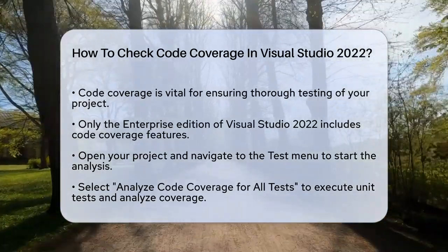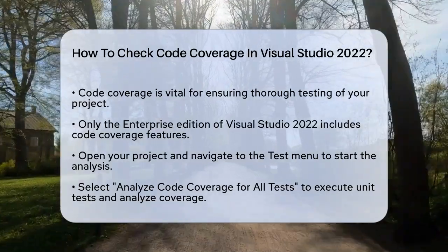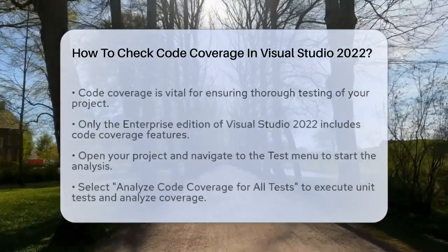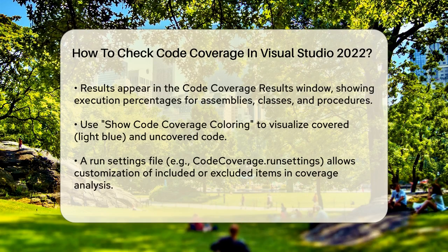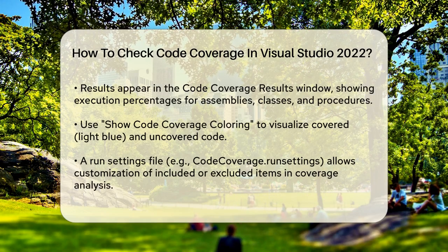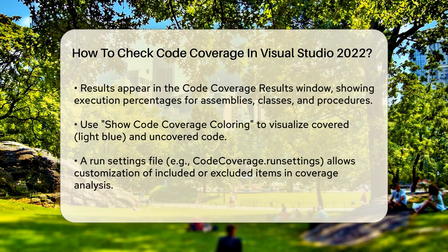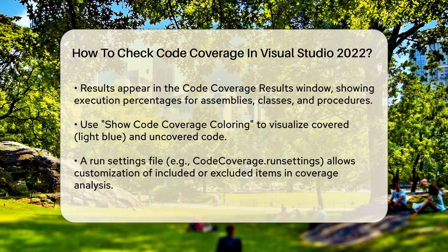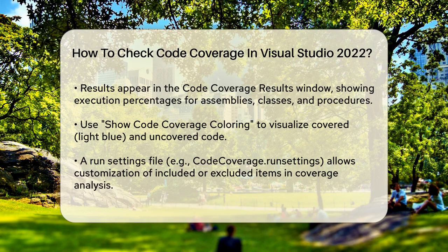This will execute your unit tests and analyze which parts of your code are being covered. Once the tests have run, you can view the results in the Code Coverage Results window. This window will show you the percentage of code executed in each assembly, class, and procedure. You can also see which lines of code have been run by selecting 'Show Code Coverage Coloring'.